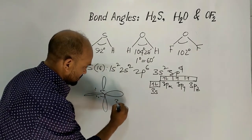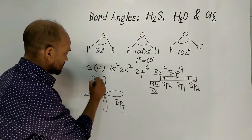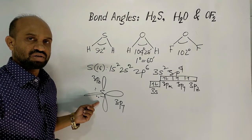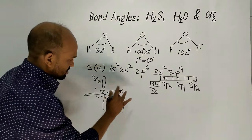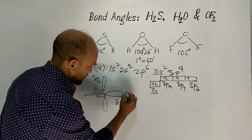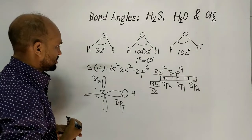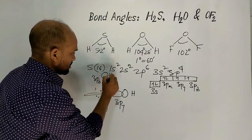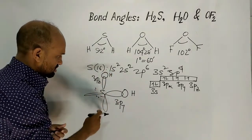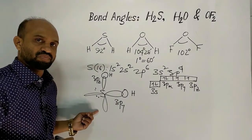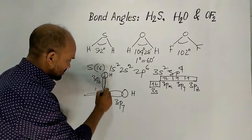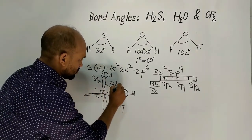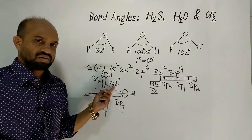The 3py and 3pz orbitals remain mutually perpendicular. This orbital overlaps with the s orbital of hydrogen. Since these orbitals are mutually perpendicular, that is why the bond angle is close to one right angle — 92 degrees.